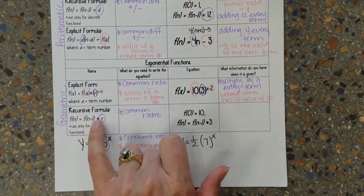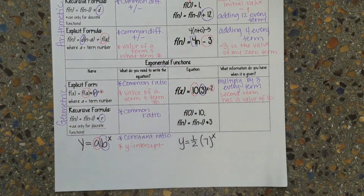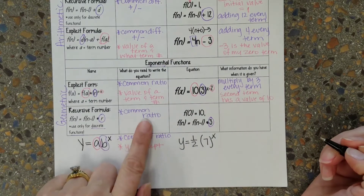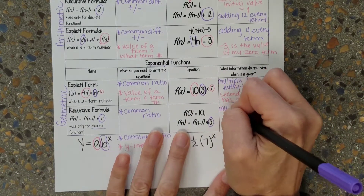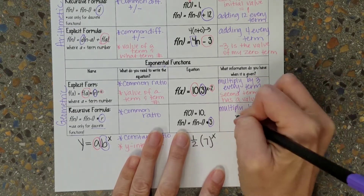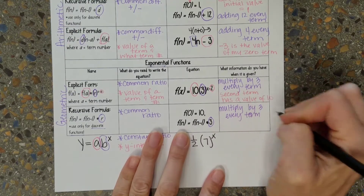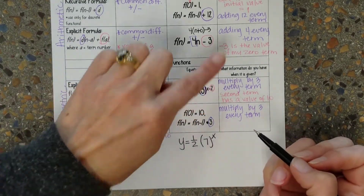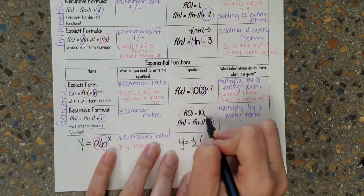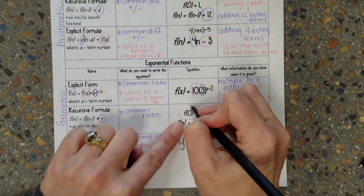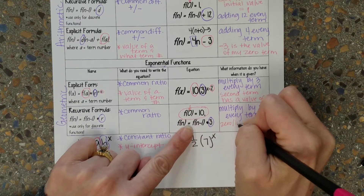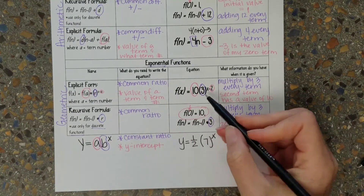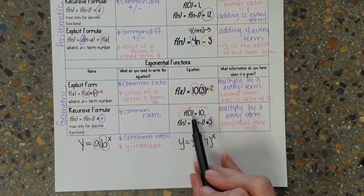The recursive formula for a geometric or exponential function — this three right here tells me it's my common ratio, so it's multiplying by three every term. And what this right here tells me is that my zero term, or initial term, is equal to 10. So this explicit example tells me my second term is equal to 10, while this recursive one tells me my zero term is equal to 10.